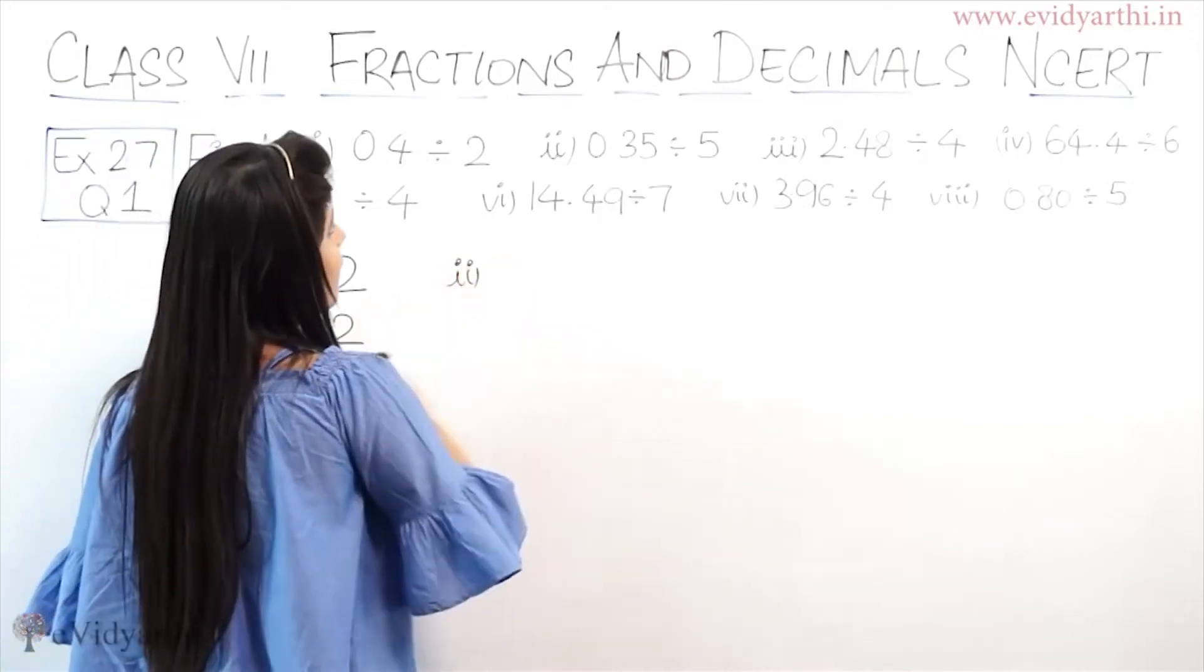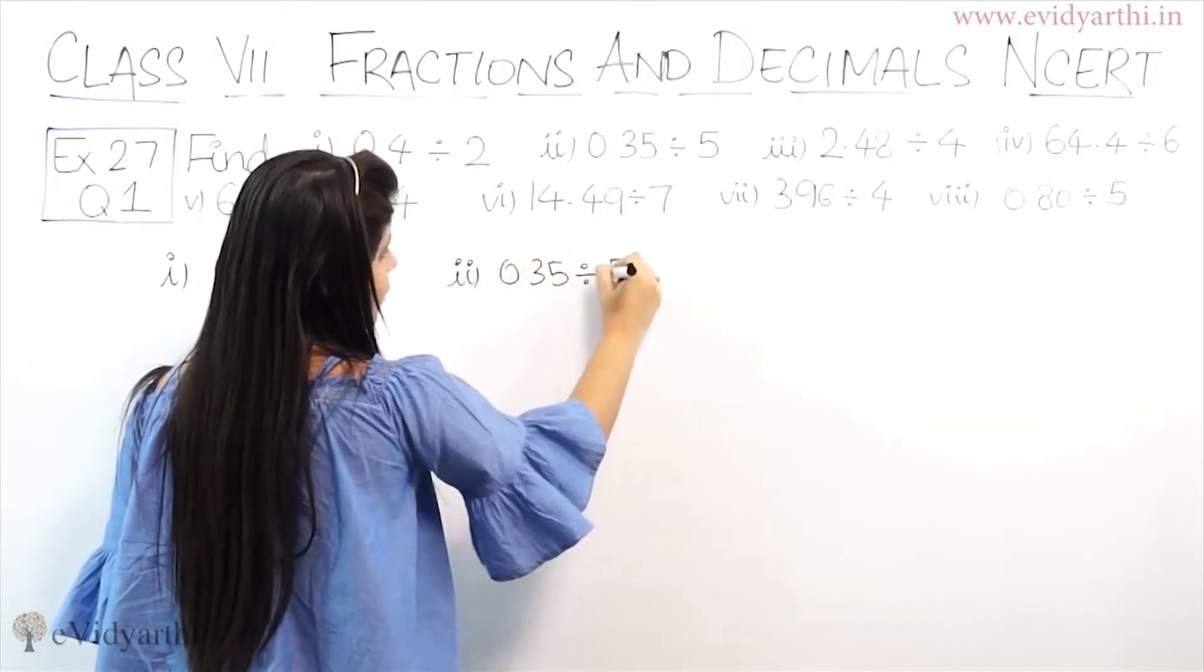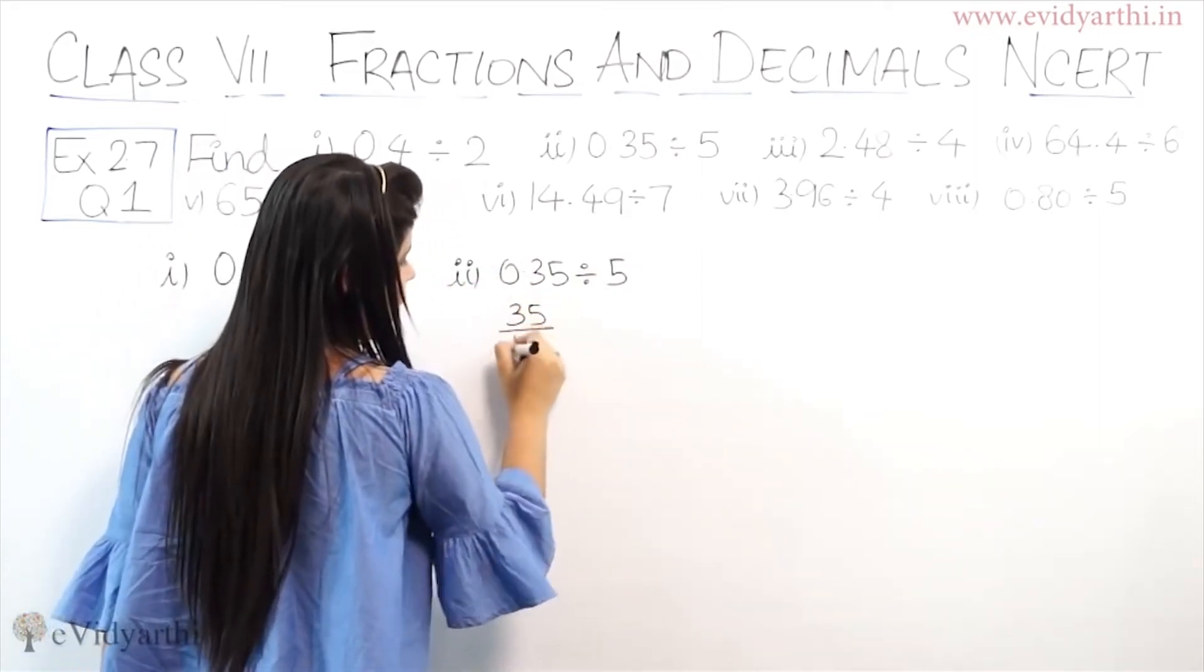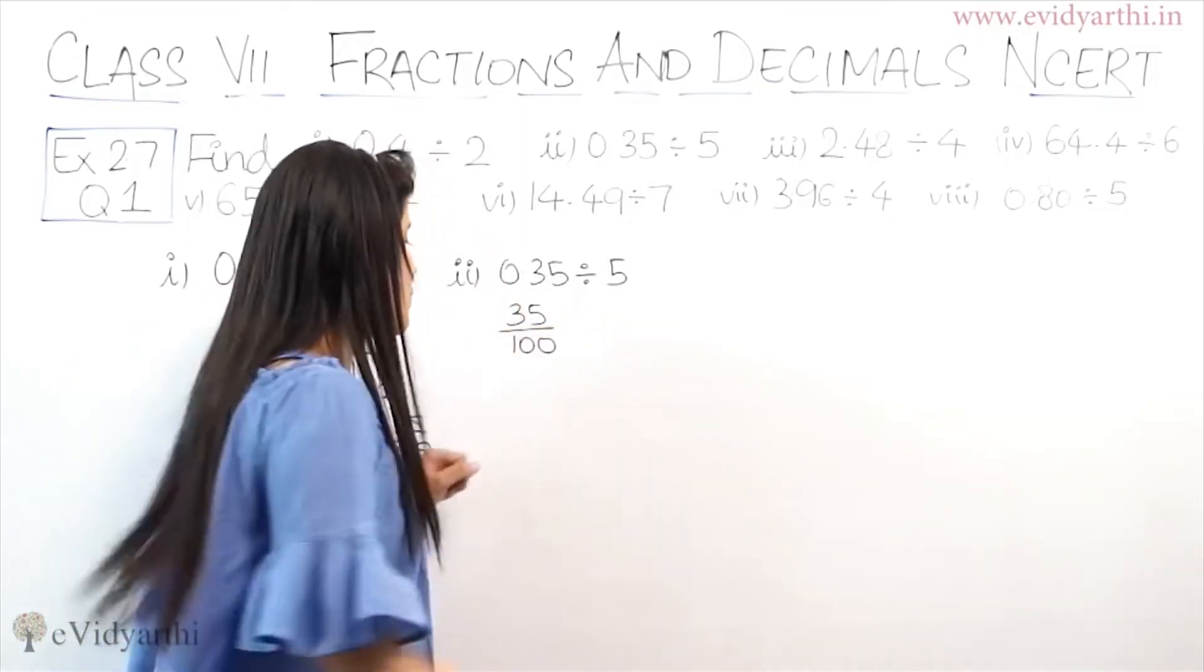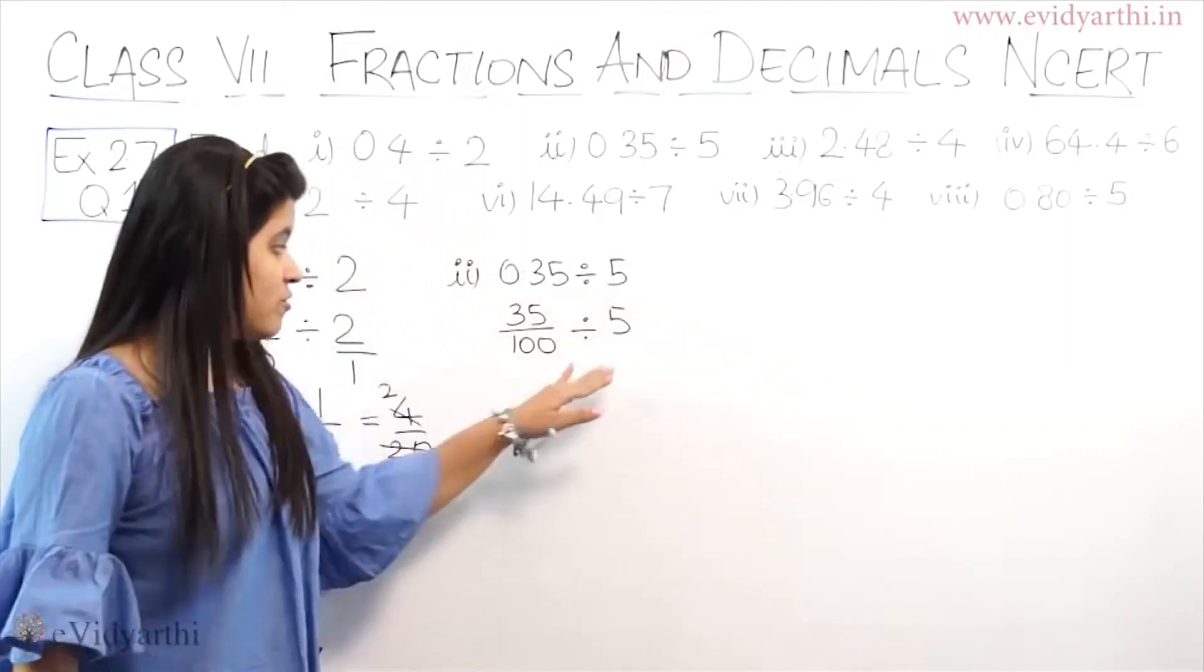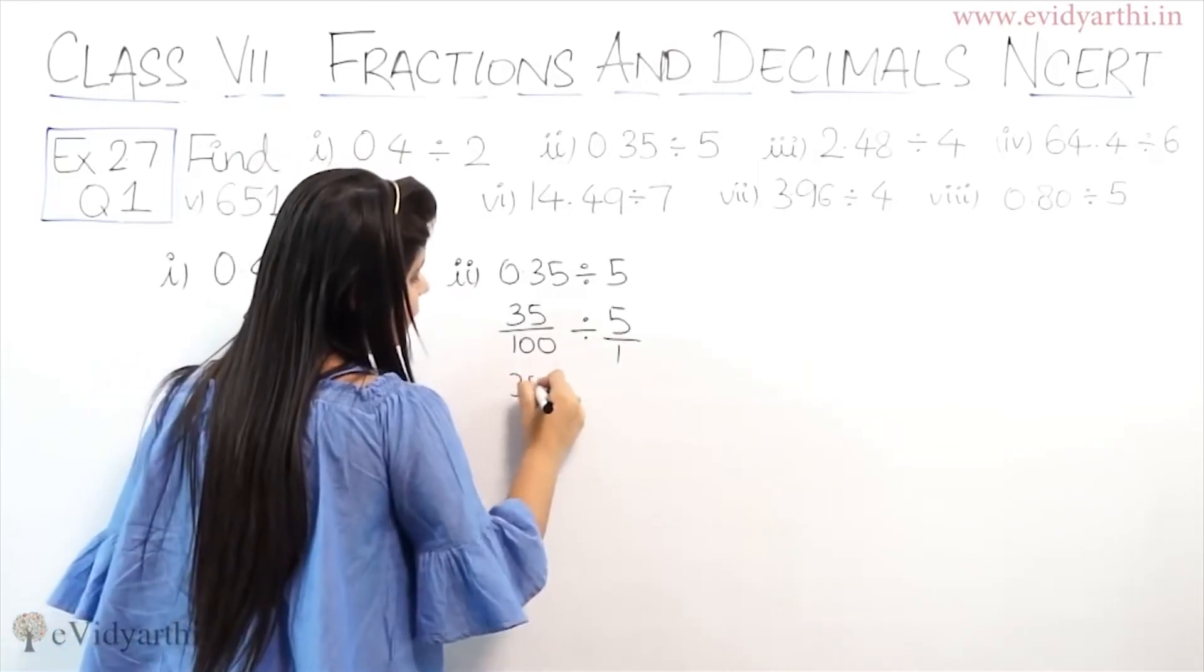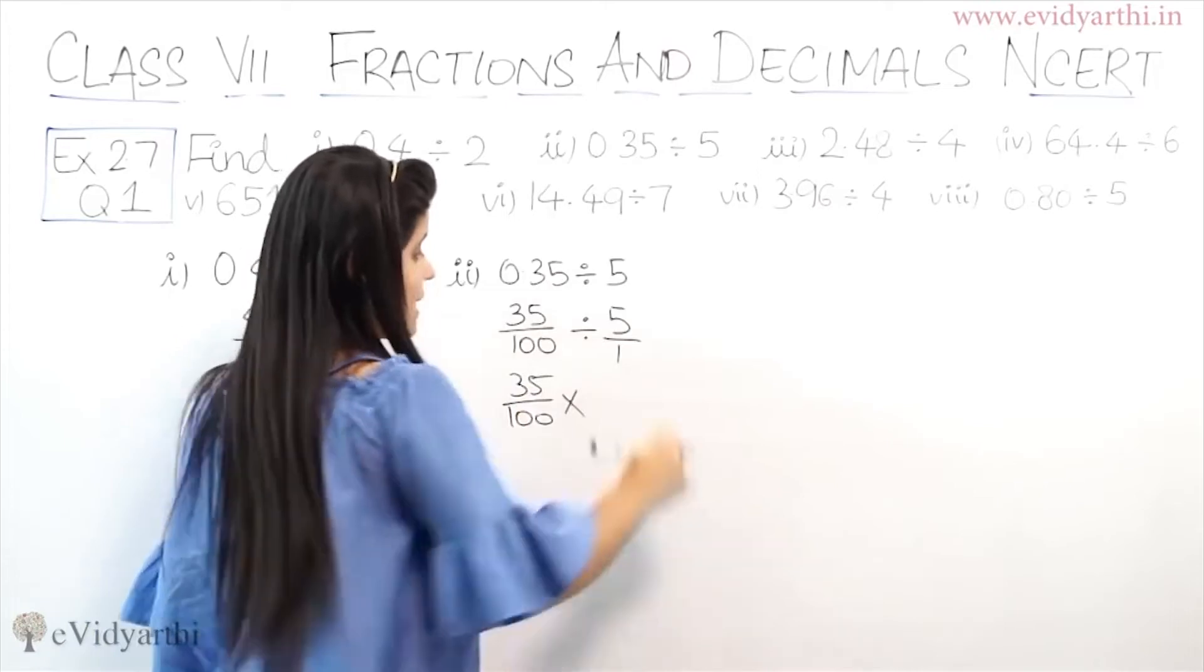Now the second part is 0.35 divided by 5. Same way, here is a point. We will remove decimal. So this is 35 upon 100. Why? Because decimal has 2 digits. So divided by 5. 5 means 5 upon 1. Now I will divide this. So divide becomes multiply. 35 upon 100, multiply the reciprocal of this.